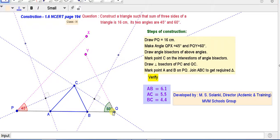Then draw perpendicular bisector of PC and perpendicular bisector of CQ. The point of intersection of this perpendicular bisector with PQ is marked as A and perpendicular bisector of CQ with the intersection of PQ is marked as B.